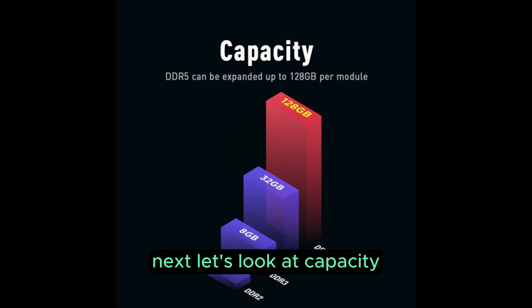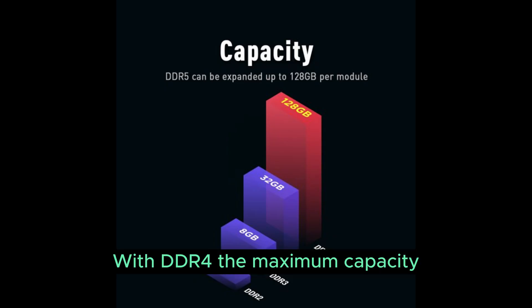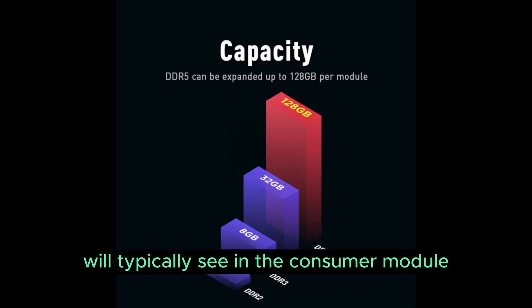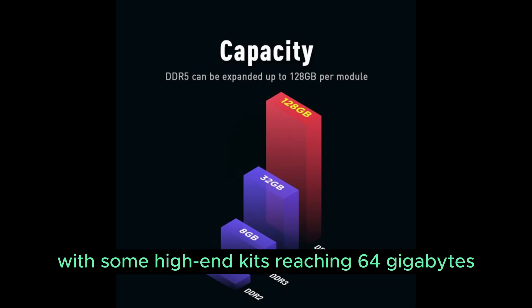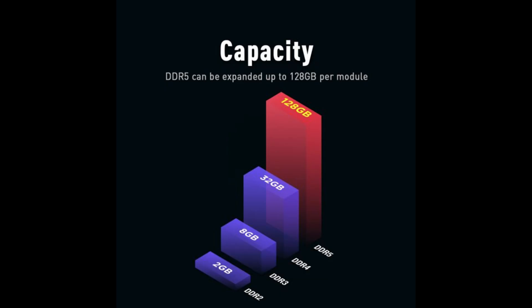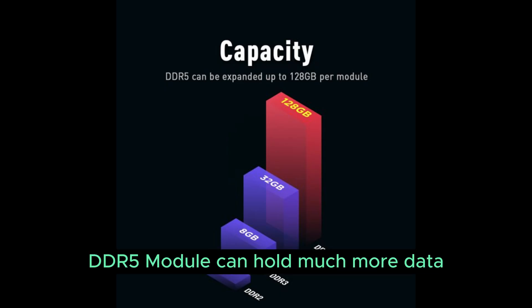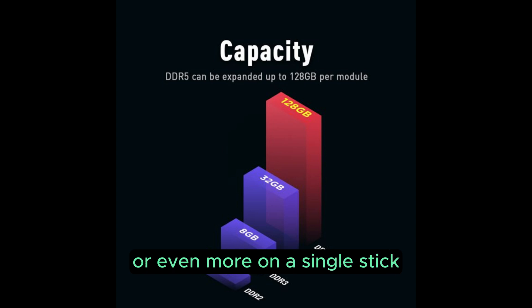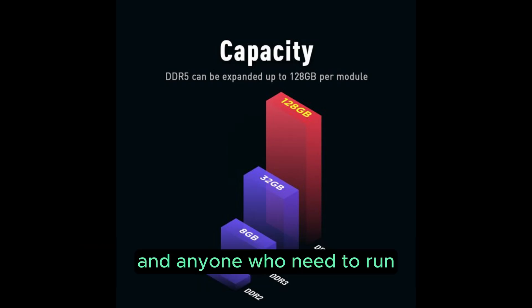Next, let's look at capacity — how much data a single memory stick can hold. With DDR4, the maximum capacity you'll typically see in consumer modules is 32 GB, with some high-end sticks reaching 64 GB, which is enough for most builds but there is a ceiling. Thanks to more advanced chip design, DDR5 modules can hold much more data, reaching up to 128 GB or even more on a single stick, making DDR5 ideal for professional workstations, servers, and anyone who needs to run extremely memory-intensive tasks.